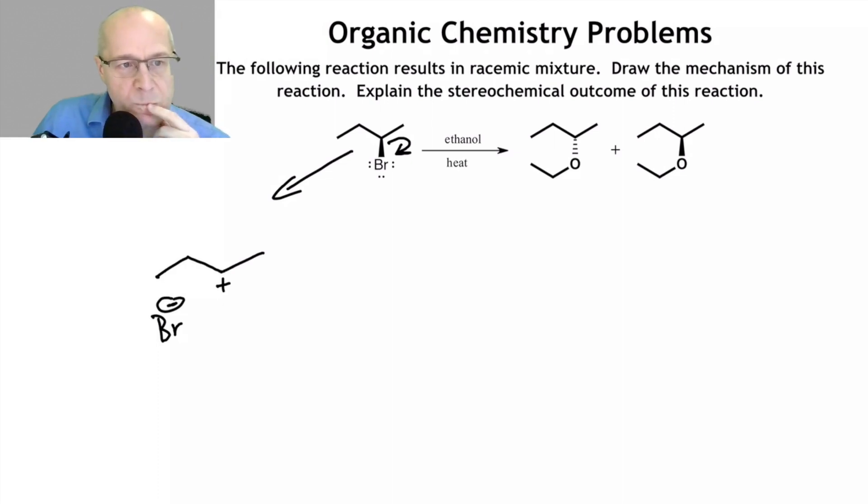Now, how are we going to explain this? We get racemic mixture. We go from being optically pure or having a molecule with absolute stereochemistry being what? One, two, R? To being R and S. Over here. 50-50.